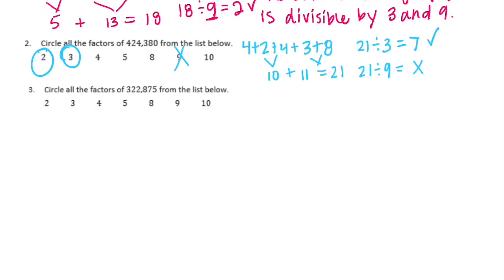Let's try 4. The divisibility test for 4 is if the last two digits are divisible by 4. So 80 divided by 4 is equal to 20. 80 is divisible by 4, so 4 works. The divisibility test for 5 is just if it ends in a 5 or a 0, which it does. So it's divisible by 5.